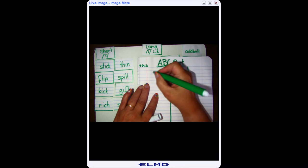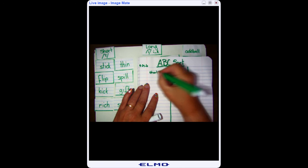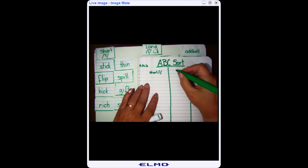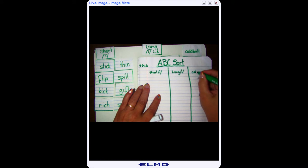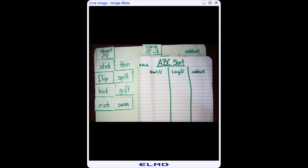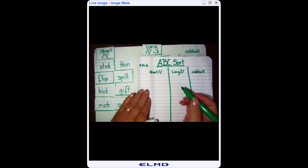And I need to label my headers and I have the short I sound. Remember those bars are the I sound. The long I sound. And I have my oddball. And the oddball is the word that does not match my pattern. So now I'm going to draw a line underneath it.